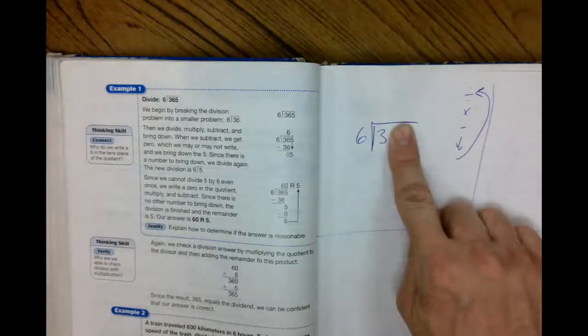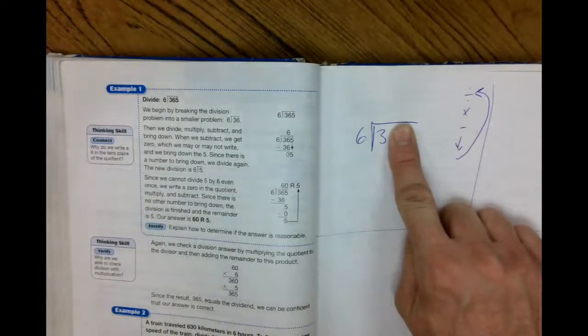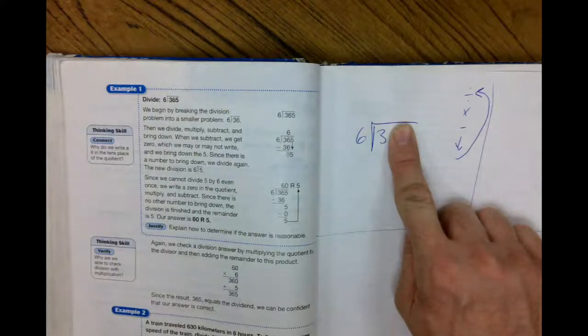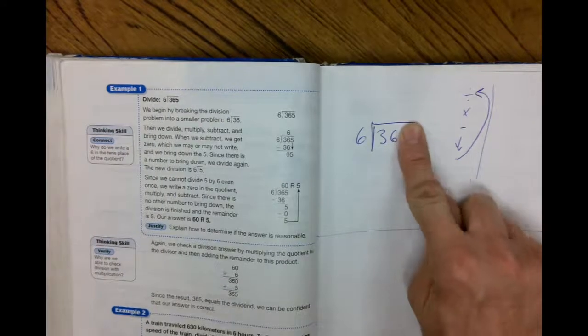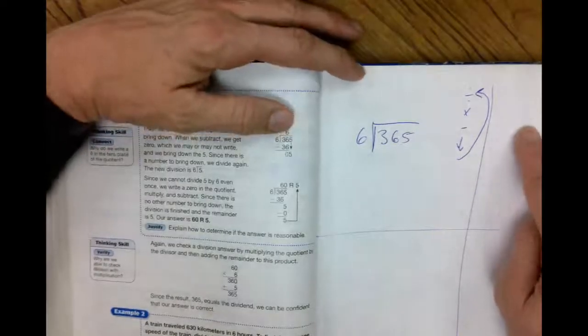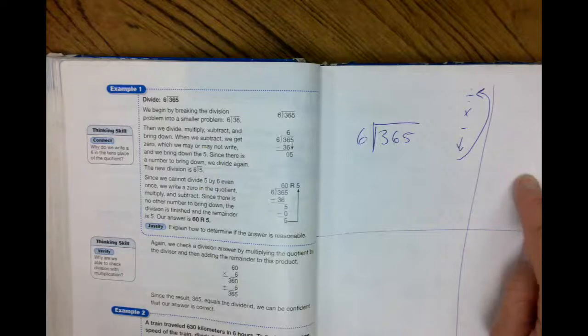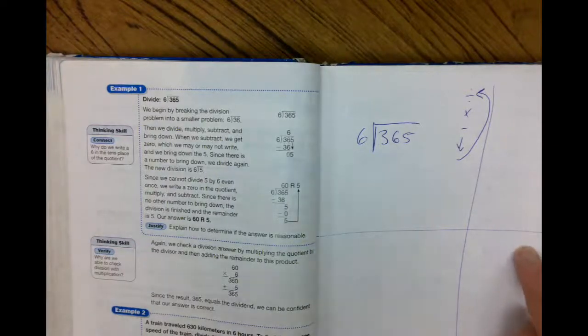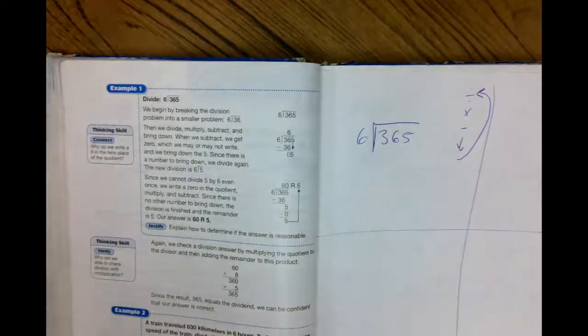The more times you say that, the better your brain is going to remember. Divide, multiply, subtract, bring down, do it again. How many times does six go into three? Zero. Now, we don't have to write a zero at the beginning. Well, how many times does six go into 36? Now, if you're one of those people that likes to use your chart, get on a six, slide down, six, twelve, eighteen, twenty-four, thirty, thirty-six, shoot out to the side, and you've got a six.